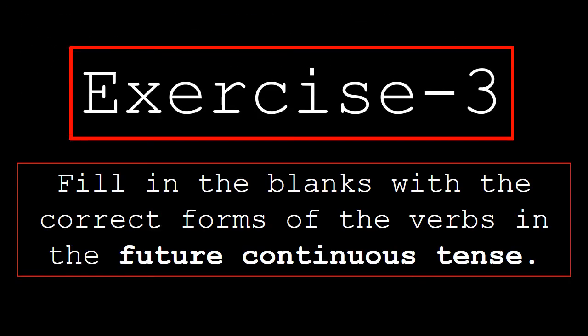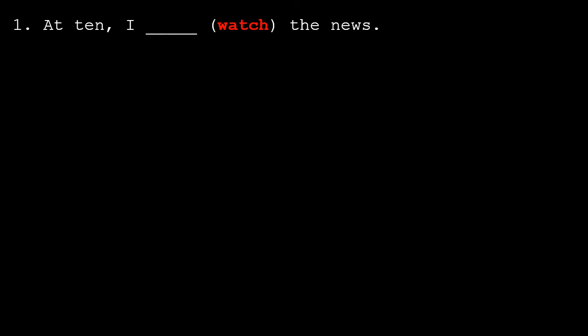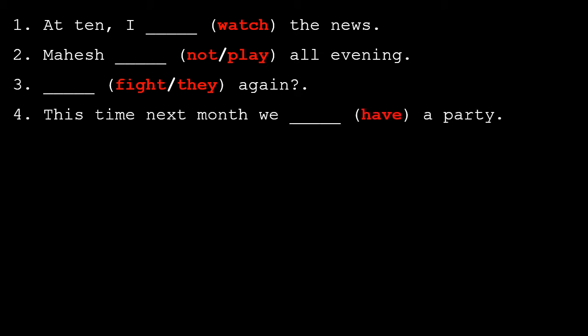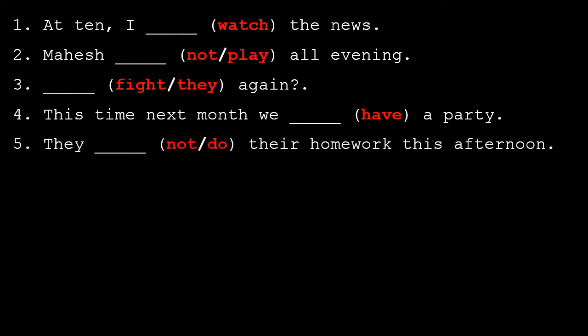Exercise 3: Fill in the blanks with the correct form of the verbs in the brackets in the future continuous tense. Number 1: At 10, I [watch] the news. Number 2: Mahesh [not play] all evening. Number 3: [Fight] or they [fight] again? Number 4: This time next month, we [have] a party. Number 5: They [not do] their homework this afternoon.